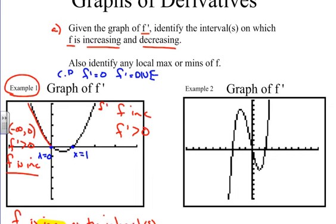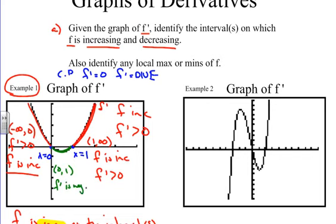From one to infinity, f is also going to be increasing because f prime is greater than zero — it's positive. Where f is decreasing, as we said, it's where f prime is negative. On the interval from zero to one, f prime is negative, less than zero, therefore f is decreasing on this interval. So we have two increasing intervals and one decreasing interval based on what we found with f prime.